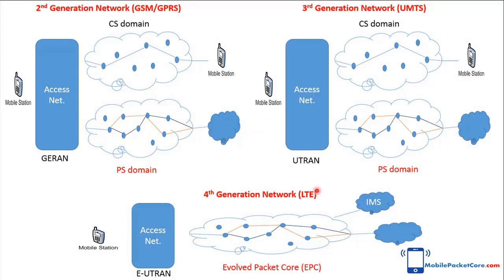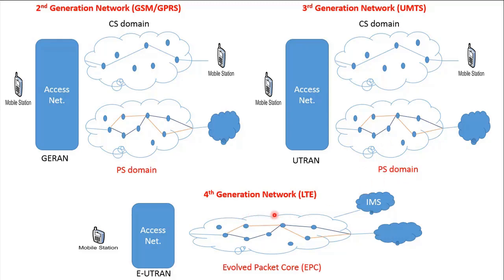Mobile networks evolved over time to afford better services. First came the 2G network, the GSM GPRS architecture, which contains a CS domain for voice calls and a PS domain for data sessions. Then came the third generation network, UMTS, which inherited its core from the GSM GPRS architecture — therefore the GPRS term can be used to refer to the PS domain in both 2G and 3G networks. After that came the 4G network, LTE, which contains only a PS domain, known as the Evolved Packet Core.